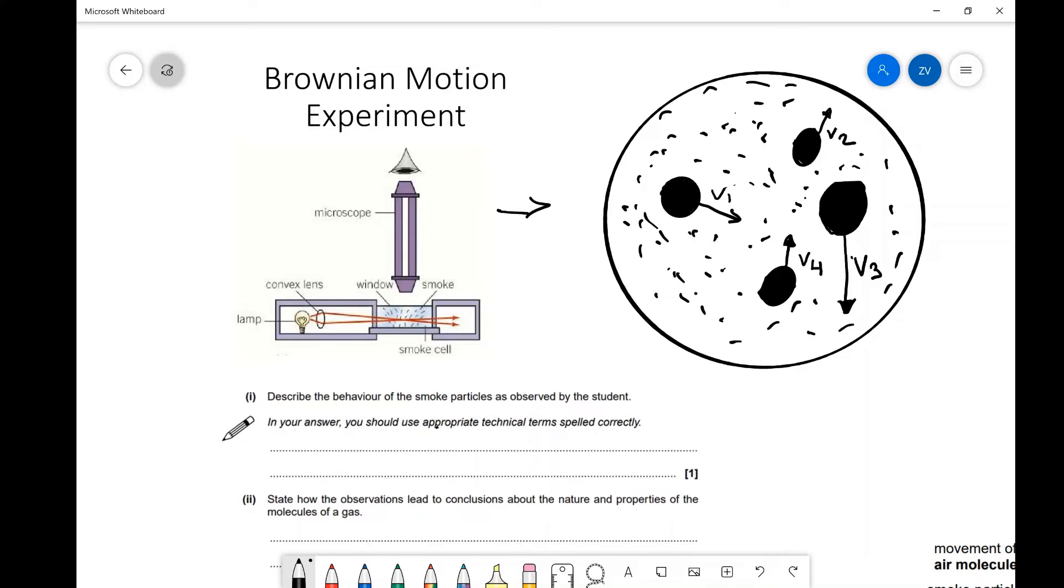Those air molecules are constantly flying about. And as they're flying about, they're colliding with the smoke particles. Notice that the random motion of the smoke particles means that the air particles, the air molecules, have to be moving randomly as well. This is an experiment which proves the nature of Brownian motion.